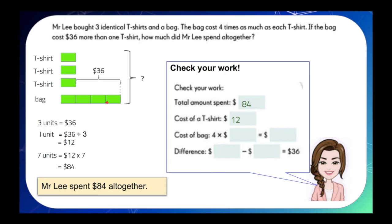So, since the bag here has four units, so we just simply multiply $12 by four and this will give us $48. And if we get the difference between $48 and $12, it will give us $36, which matches the information in our model. And so, therefore, we can clearly say that our answer is correct.